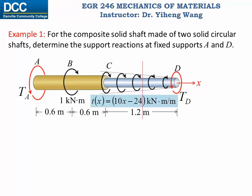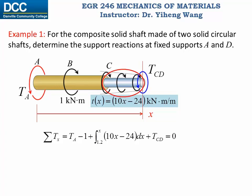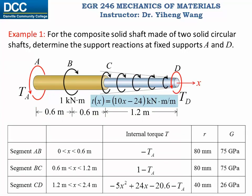Lastly, we section between C and D at an arbitrary location x, exposing the internal torque TCD. We write the equilibrium equation summing torques about the x-axis, and notice the integration term: the integral of the load intensity from 1.2 to x gives the resultant torque over that portion. From this equation we can write TCD as an expression of TA that is also a function of location x. We summarize the internal torque T, radius, and modulus of rigidity G for each segment AB, BC, and CD in a table.